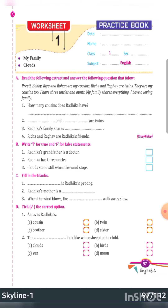Now answer the questions. How many cousins does Radhika have? Let's read again: Preeti, Bobby, Rhea and Rohan — and Richa and Raghav also. So total six, right? Radhika has six cousins. You will write 'Radhika has six cousins' here.